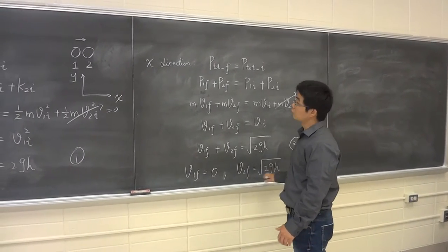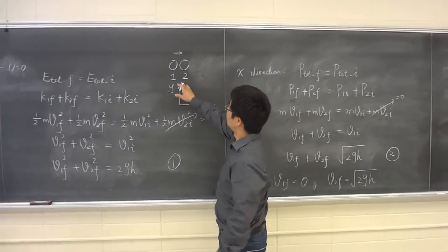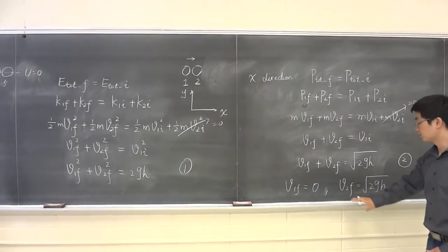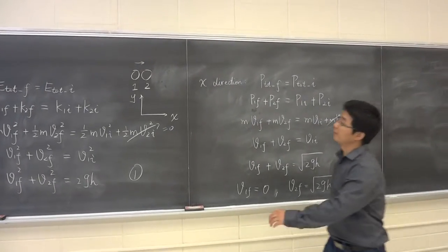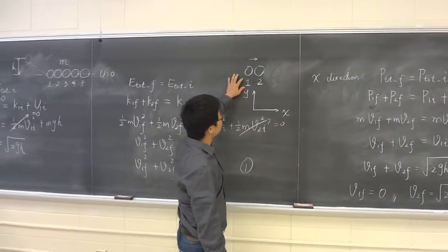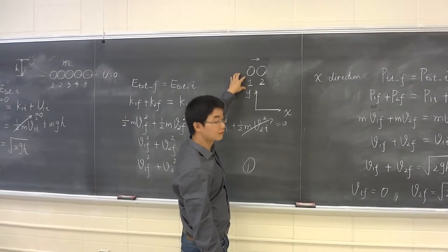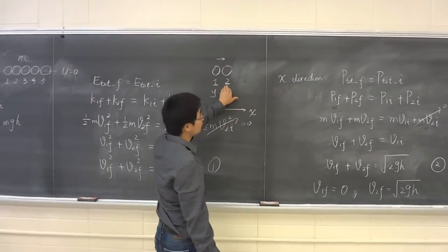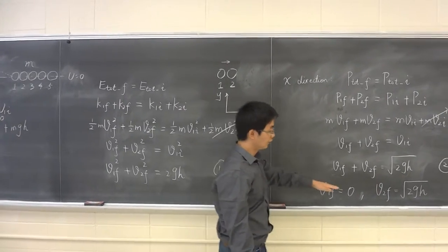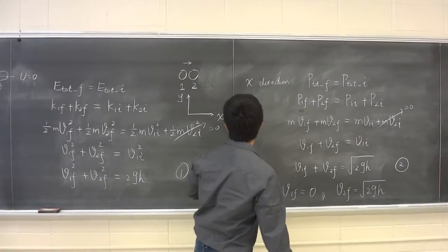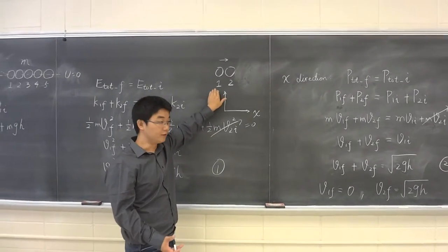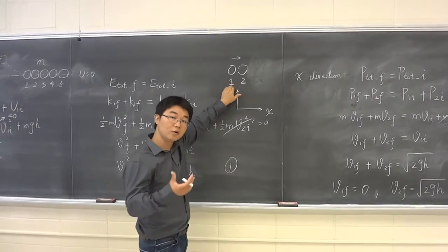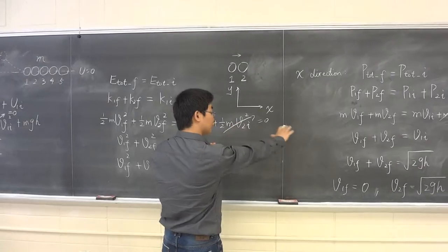V₂F is exactly the initial velocity of the first ball before the collision. So now if we look at the solution, after the first ball strikes the second ball, the first ball stops immediately because its final speed is zero, and the second ball starts to move to the right with the same velocity as the first ball had before the collision. The second ball gets all of the velocity and moves to the right.